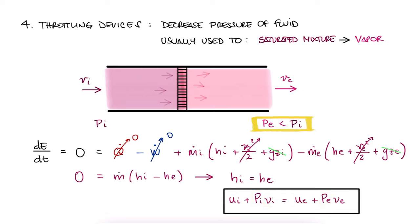Usually, if the pressure at the inlet is higher than the pressure at the exit, it means that the temperature at the inlet is also higher than the temperature at the exit, which in turn means that the internal energy at the inlet is higher than at the exit.